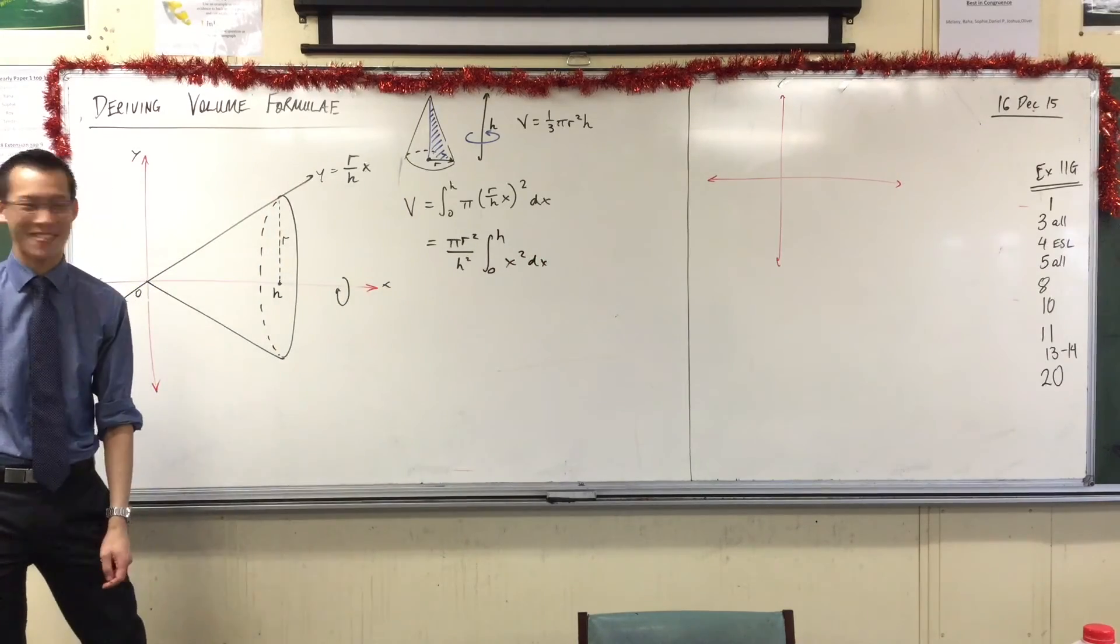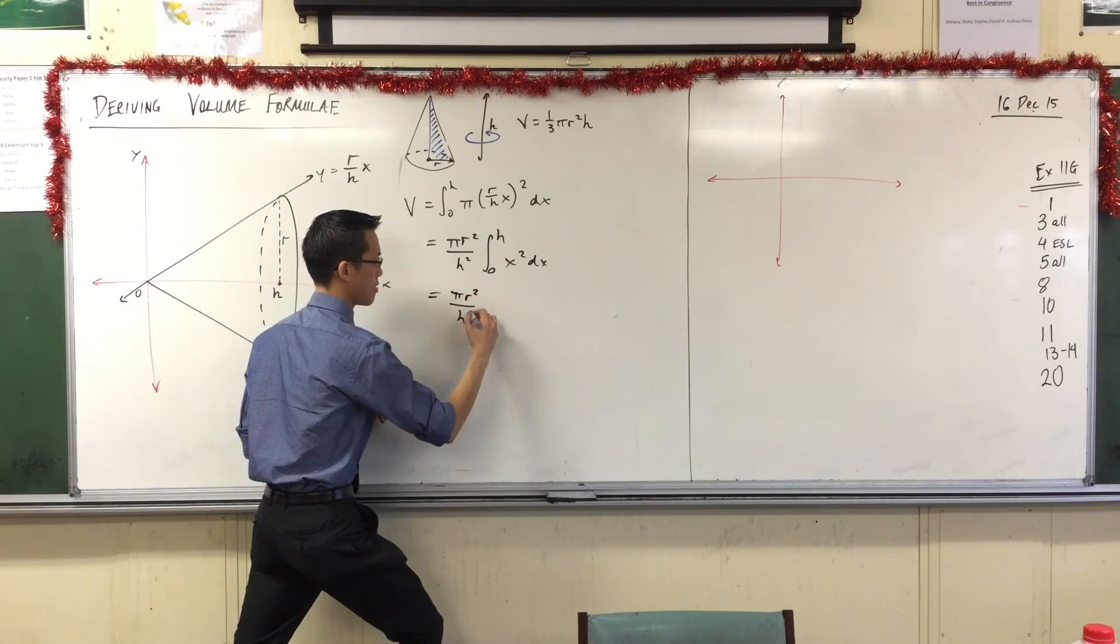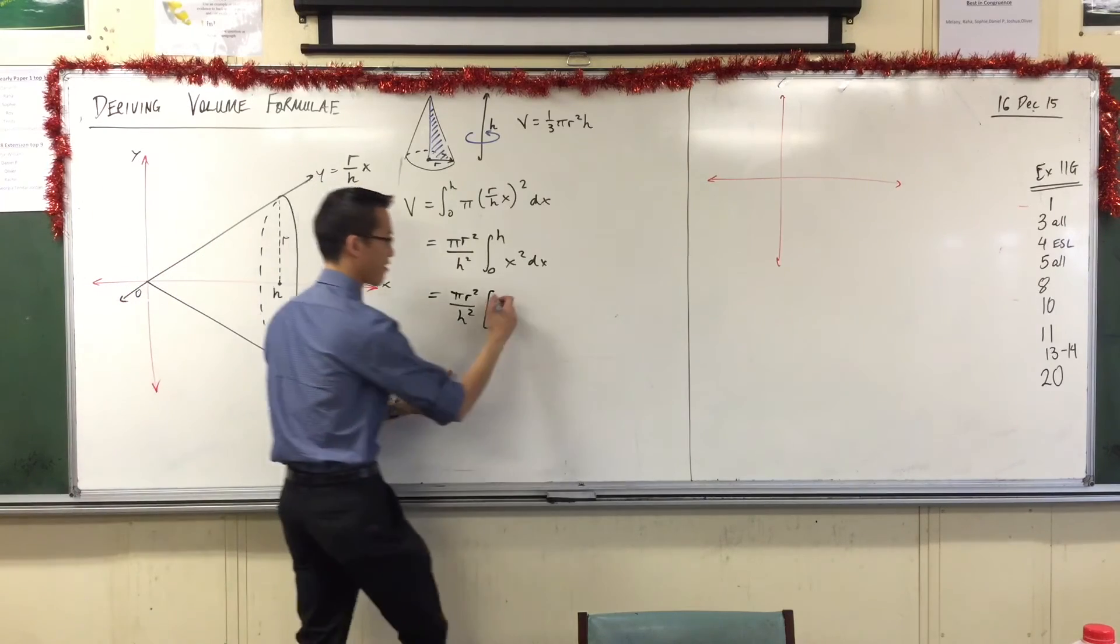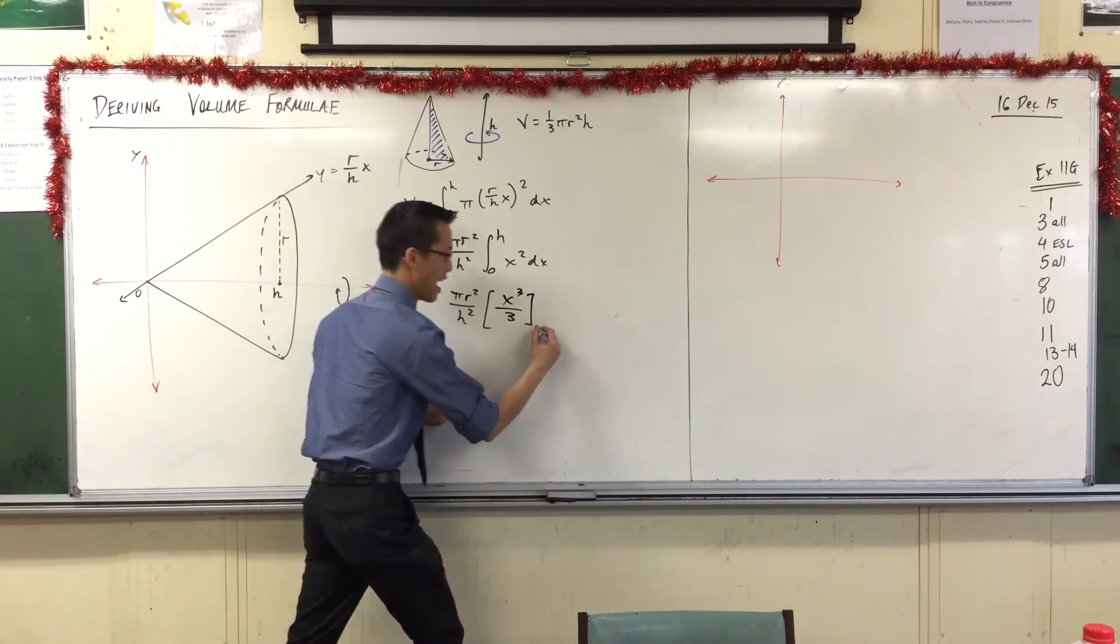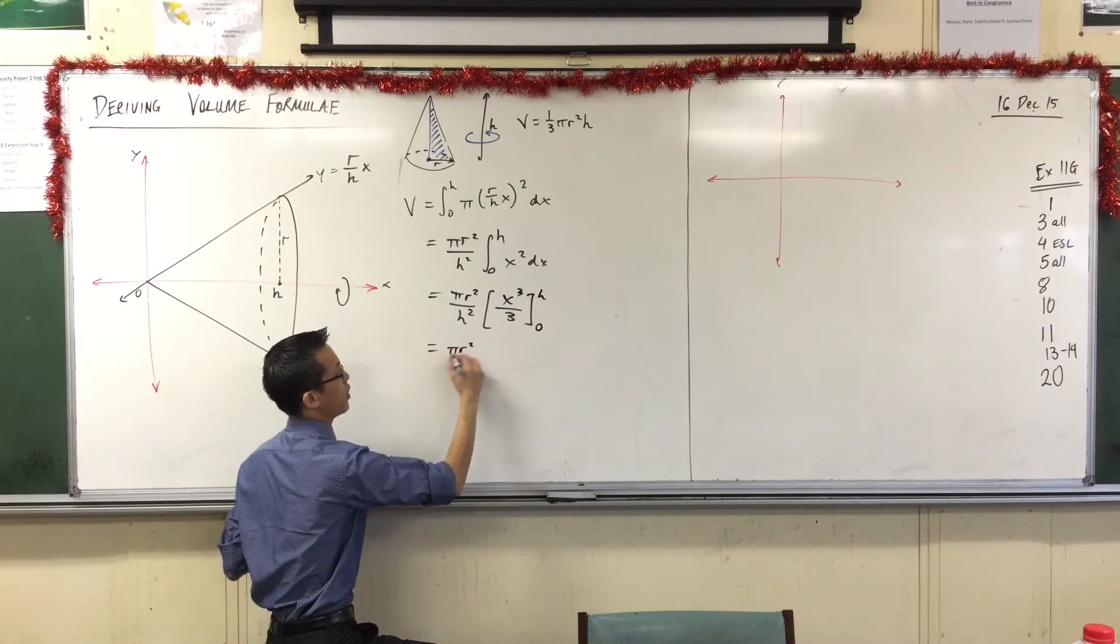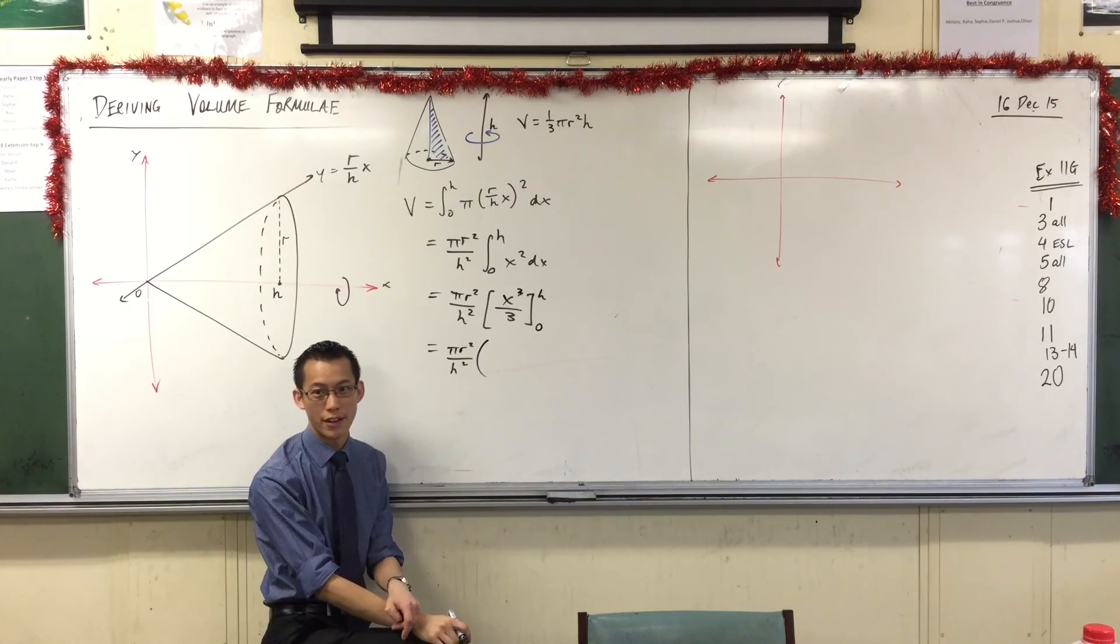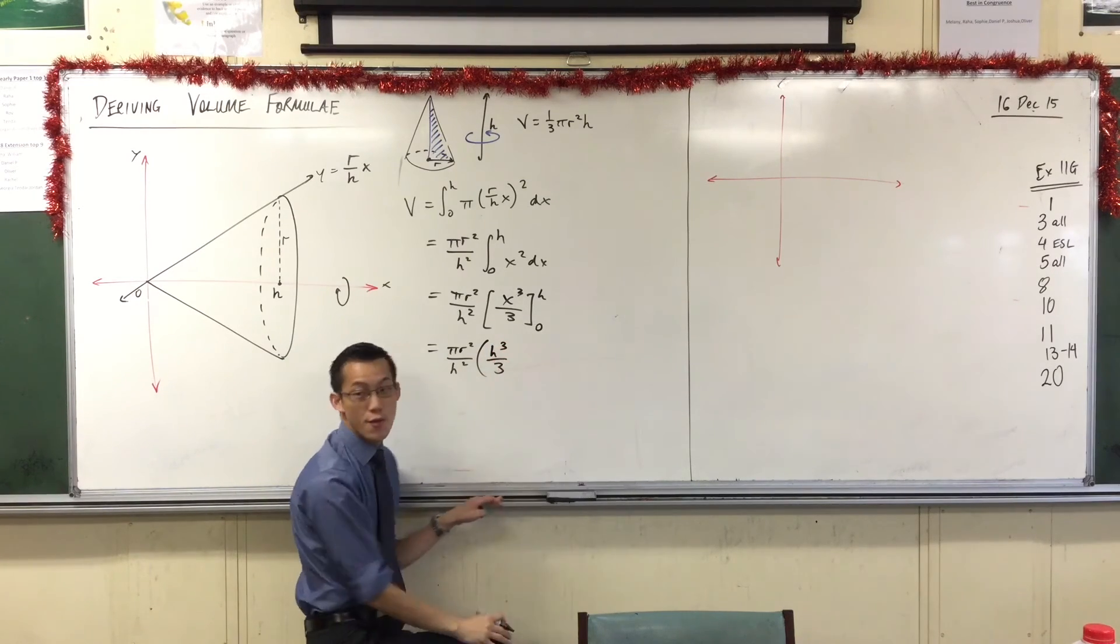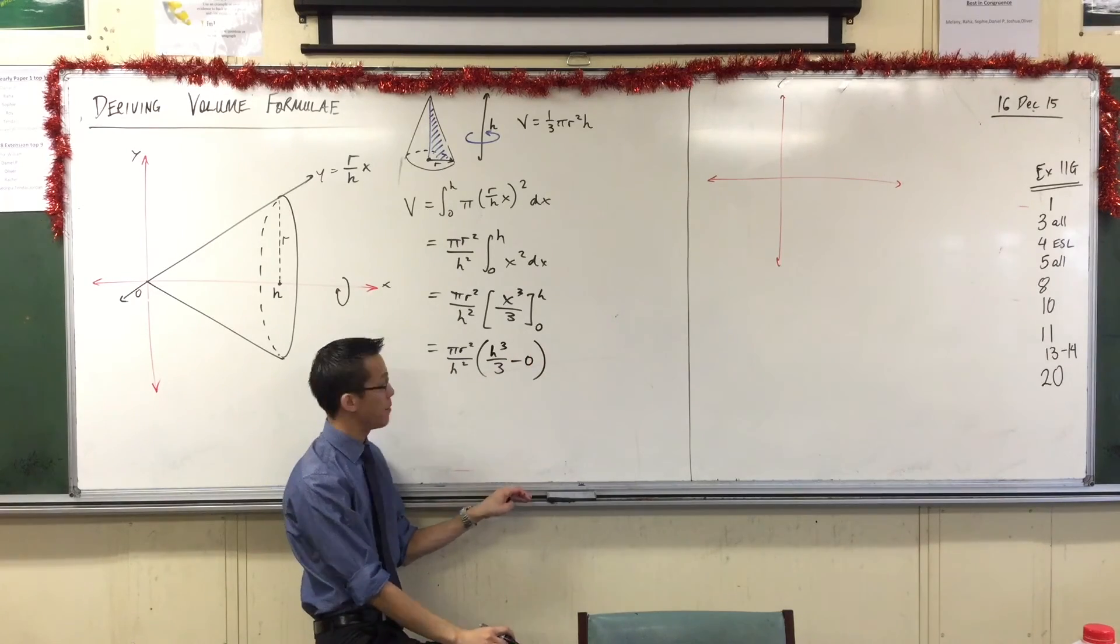Super, super easy to do it with. So let's go ahead. Let's integrate. The primitive function, of course, is x cubed on 3. The power goes up, and you divide by the power. And now we're about to evaluate at our upper and lower bounds. So pi r squared on h squared, still hanging out the front there. What happens when you evaluate at the upper boundary? Very good. h cubed on 3. You evaluate at the lower boundary, just gives you take away 0. So that's something I don't need to worry about now.